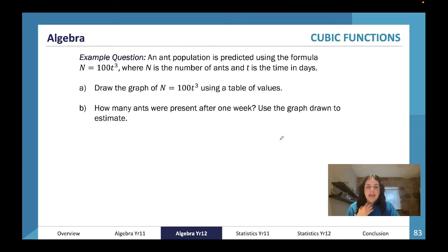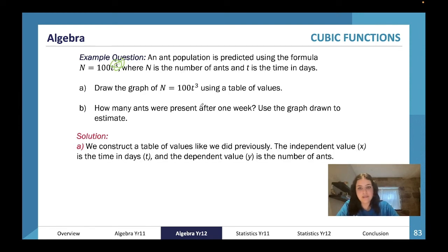Here's an example question: an ant population is predicted using the formula n = 100t³. We know this is cubic because it's a cube, where n is the number of ants and t is the time in days. Draw the graph of n = 100t³ using a table of values. How many ants are present after one week? Use the graph to estimate. We're going to construct a table of values like we did earlier. The dependent value is the number of ants because it depends on the time in days, so y is the number of ants and x is the time in days, t.